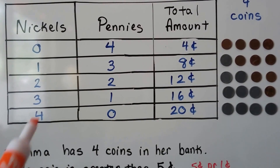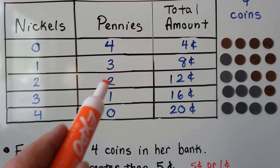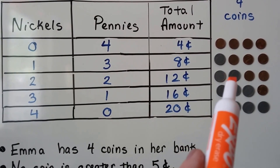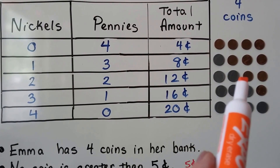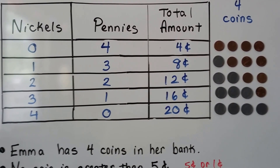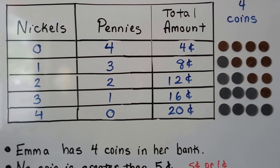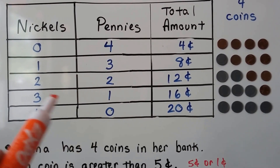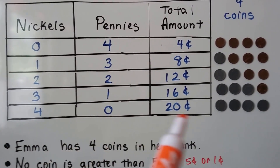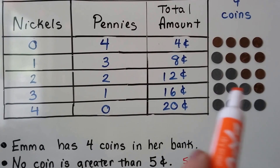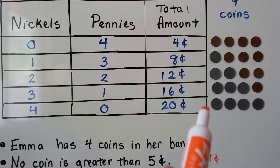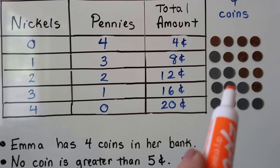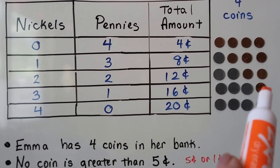If she had two nickels and two pennies, that would be four coins and she would have twelve cents: five cents, plus five more is ten, plus one more is eleven, plus one more is twelve. If she had three nickels and one penny, that would be four coins: five, plus five more is ten, plus five more is fifteen, plus one more is sixteen cents.